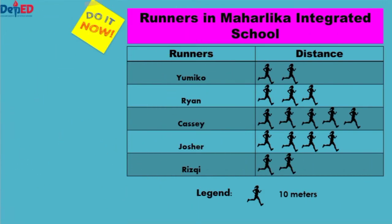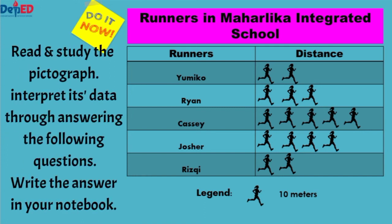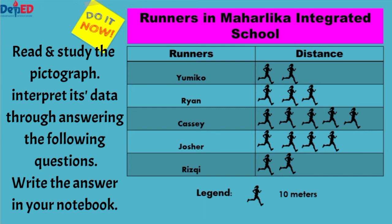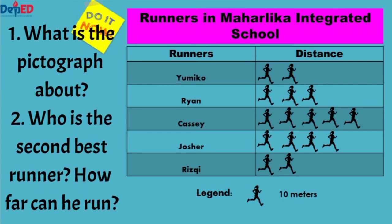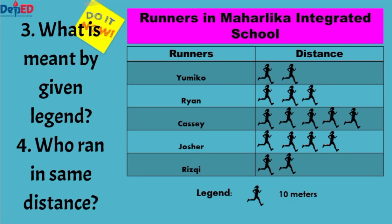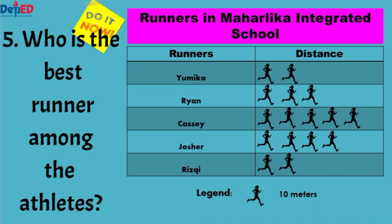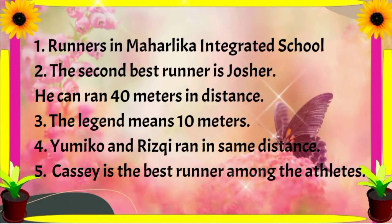Now it's time for you to work on your activity. Read and study the pictograph, and interpret its data by answering the following questions. Write your answer in your notebook. Number one, what is the pictograph about? Number two, who is the second best runner and how far can he run? Number three, what is meant by the given legend? Number four, who ran the same distance? Number five, who is the best runner among the athletes? Use the following answers to check your work.